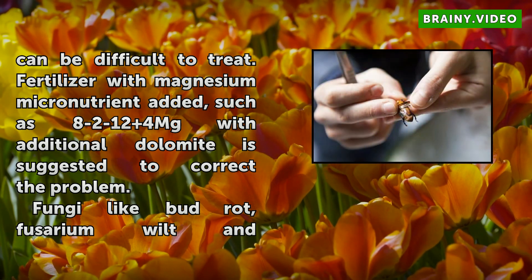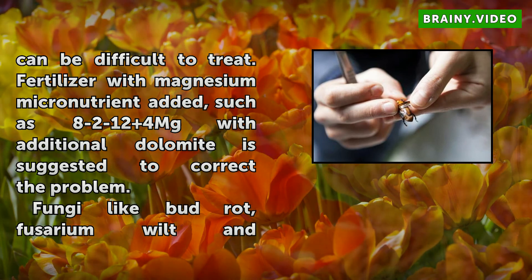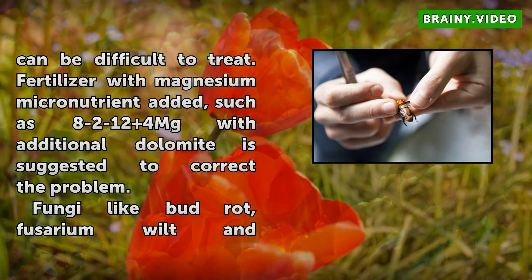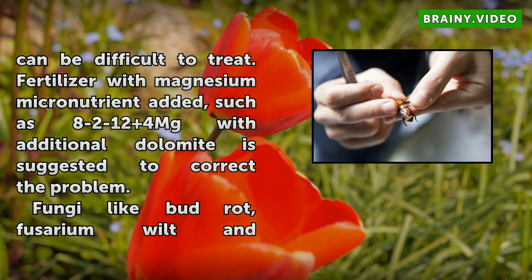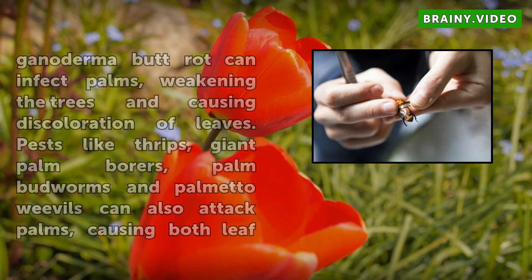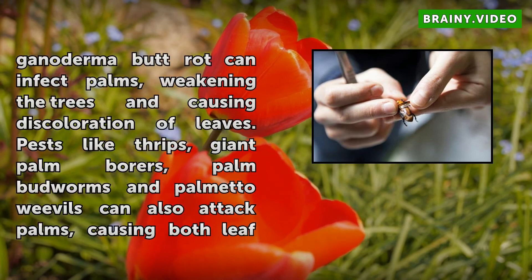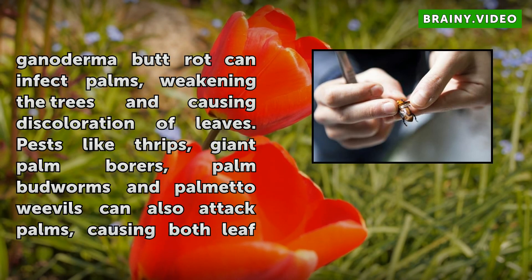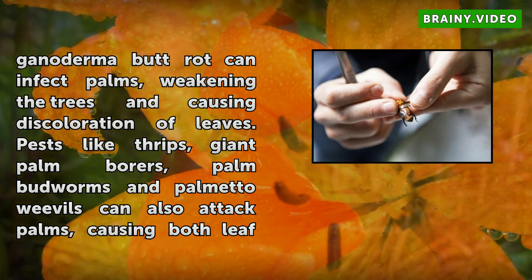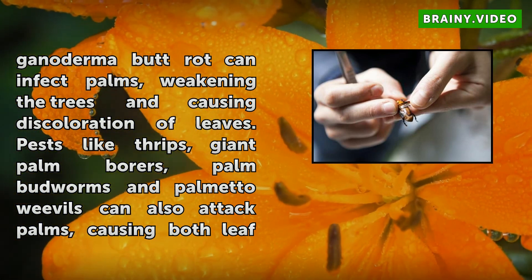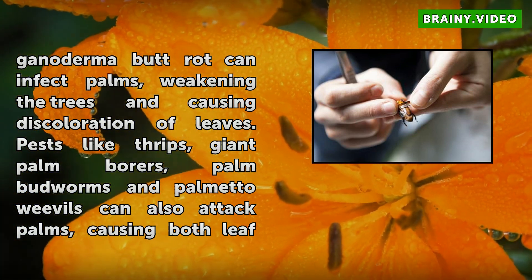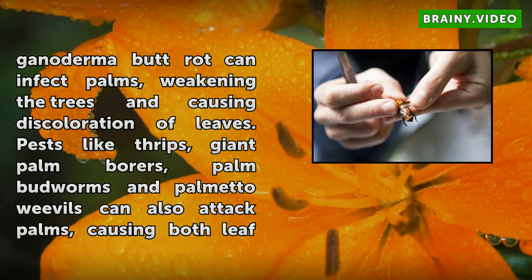Fungus can also be a problem for palm trees. Fungi like butt rot, Fusarium wilt, and Ganoderma butt rot can infect palms, weakening the trees and causing discoloration of leaves. Pests like thrips, giant palm borers, palm budworms, and palmetto weevils can also attack palms, causing both leaf and trunk damage. Consult your local agricultural extension for the most effective ways to control these pests.